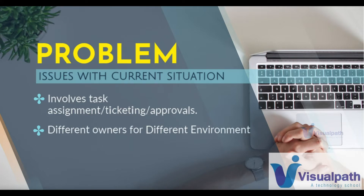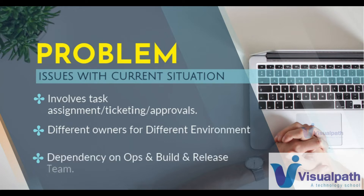Developer owns the dev environment, QA owns the QA environment, software testers and production are owned by different teams — monitoring team, site reliability engineers. So there will be too many ticketing assignments and approvals going back and forth, which is quite problematic in an agile process. There are too many dependencies on operations and build and release teams for deployment.